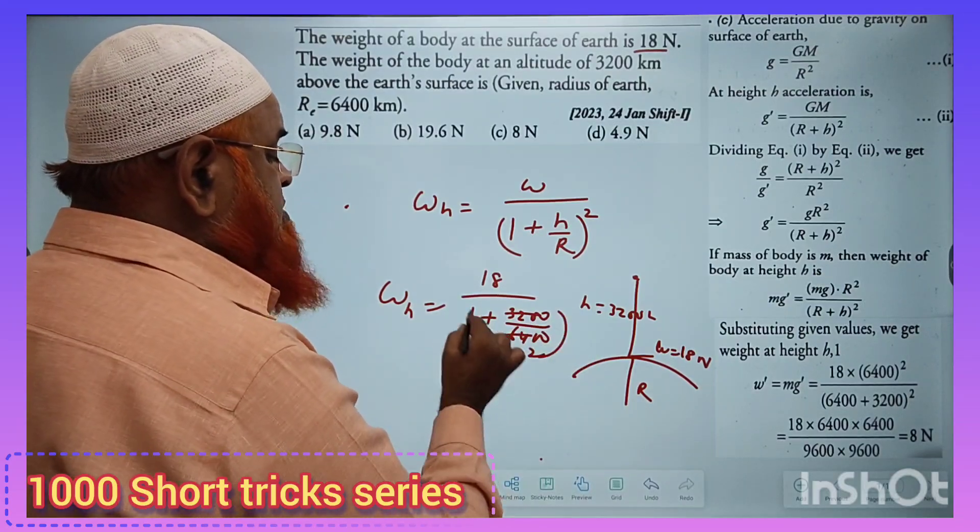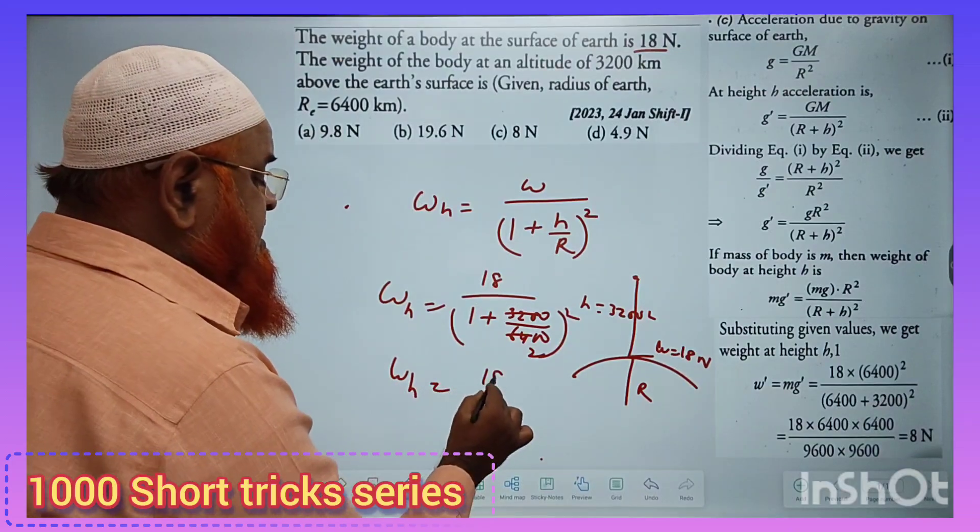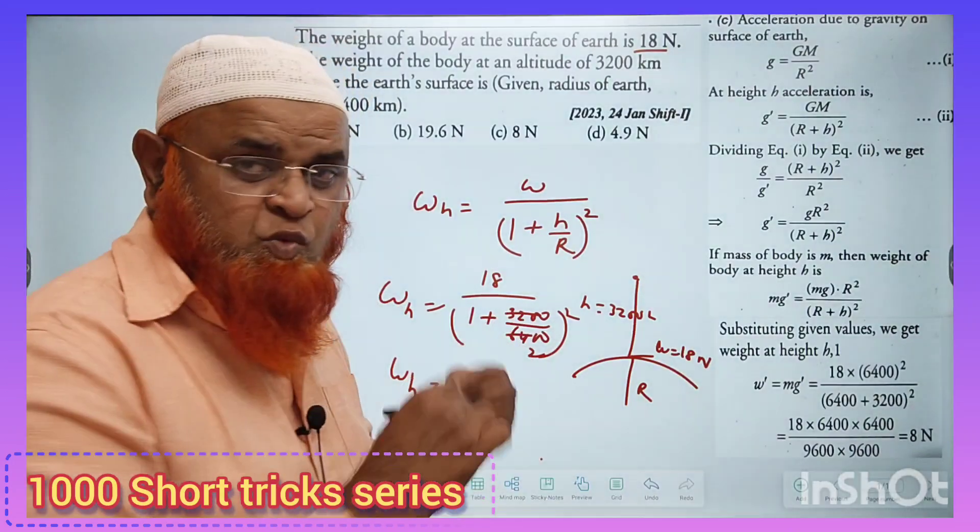This is 1 time, this is 2 times, and it is going to be whole square. So weight at certain height is going to be 18 divided by 1 plus 1 by 2, which is nothing but 3 by 2 whole square.